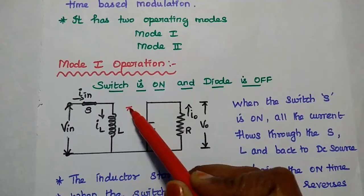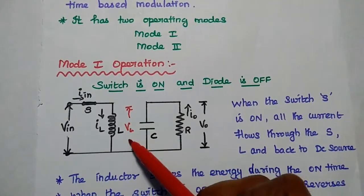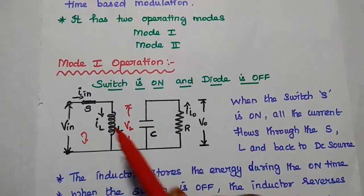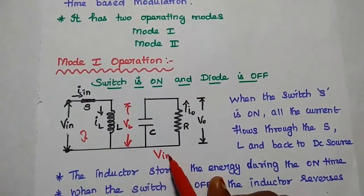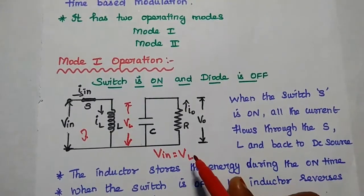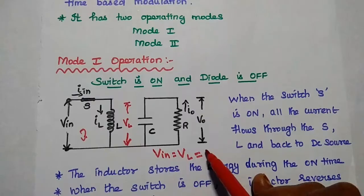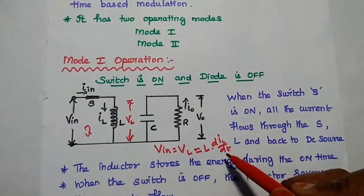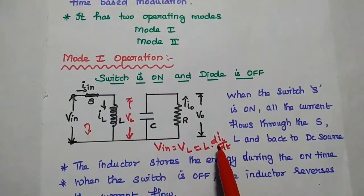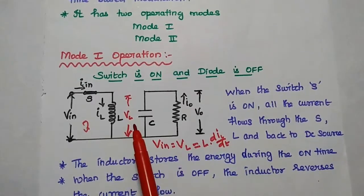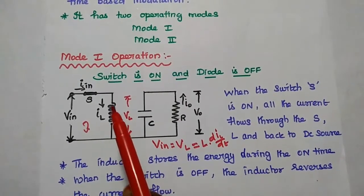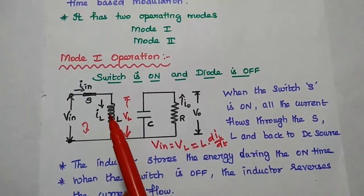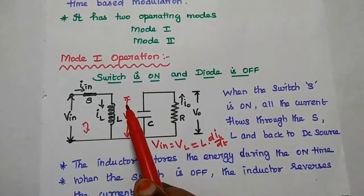The voltage across the inductor is represented as V_L. Applying KVL to the circuit, we get: V_in equals the inductor voltage, which is L × dI_L/dt. This is the general relation between V_L and I_L. When the switch is ON, the inductor starts storing energy during the on-time. Whenever the switch is OFF, it starts releasing the energy in the reverse direction.